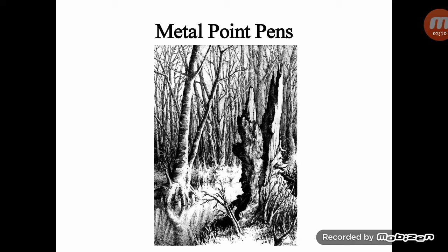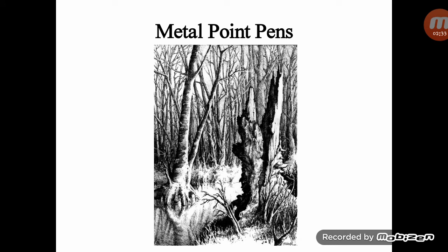A metal point drawing is made by dragging a metal stylus over the surface of a prepared paper, leaving a mark much like a graphite pencil. Many metals such as copper, silver, gold, and platinum can be used to create a metal point drawing, each having unique characteristics. Metal point drawings are labor intensive and require great patience.